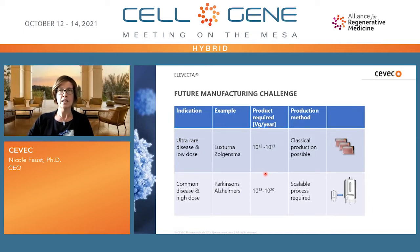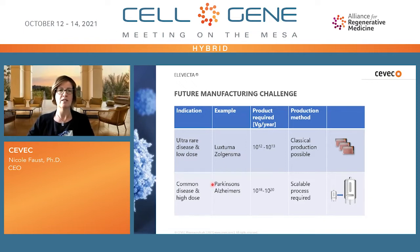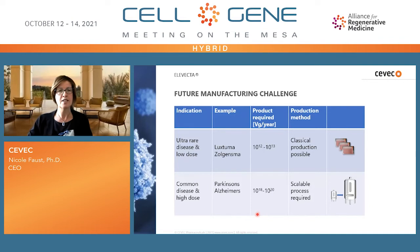This means that the classical production method, as it was developed at the universities where the therapies were invented, can still be used to generate market material. That scenario drastically changes when we look at many new indications for which clinical trials are now starting — some targeting very common diseases like Parkinson's or Alzheimer's, and in many cases requiring much higher doses per patient. This can lead to a million-fold increase in yearly product demand, and here a scalable process is desperately required.